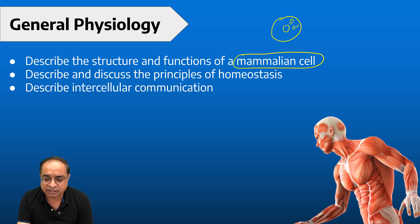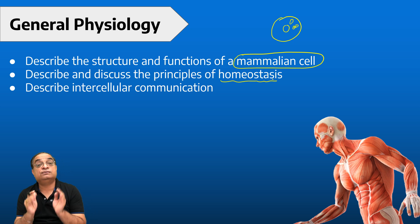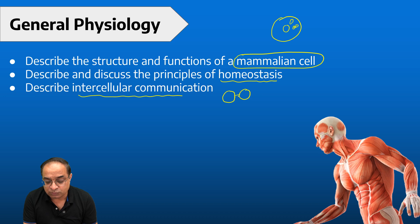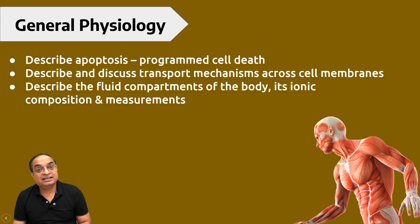Then the second topic is about homeostasis—the maintenance of constant internal environment, whether it is related to thermoregulation or osmoregulation. And then intercellular communication—how two cells are able to communicate with one another through different types of intercellular junctions. There are tight junctions, there are gap junctions, desmosomes, hemidesmosomes, so all those different intercellular junctions we have to study.